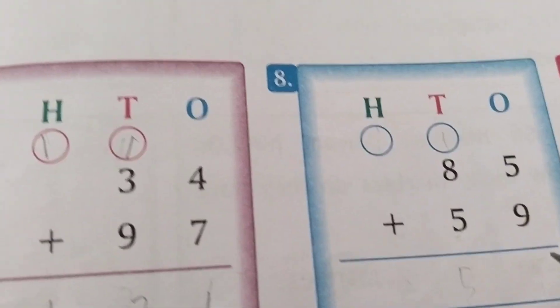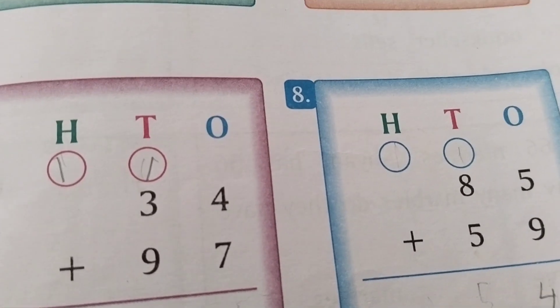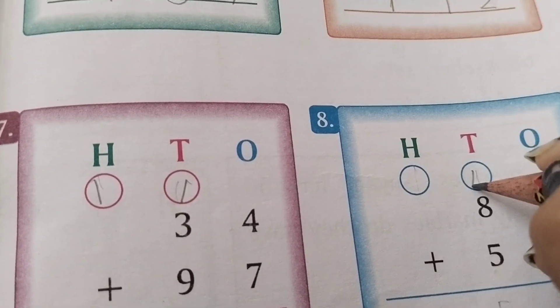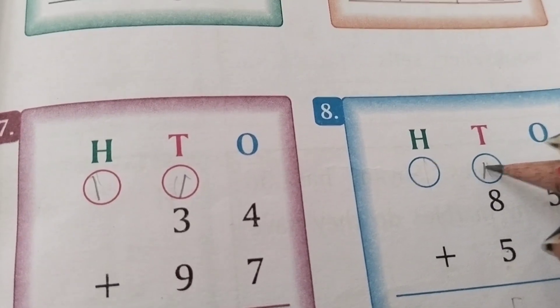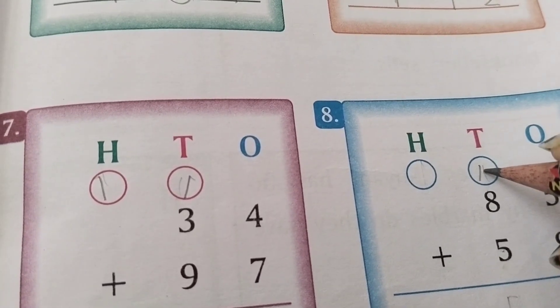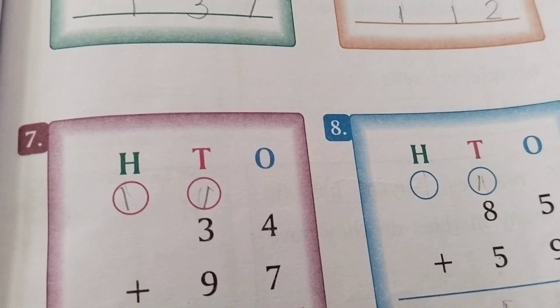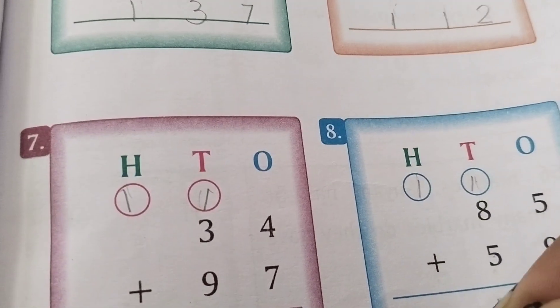Then 5 plus 9 equals 14. We write 4 and carry 1. Then 8 plus 5 plus 1 makes 14. We write 4 and carry 1 here. Then 1 comes down.